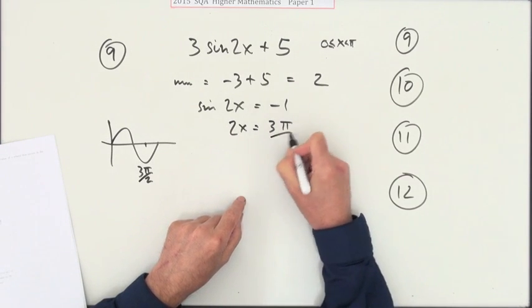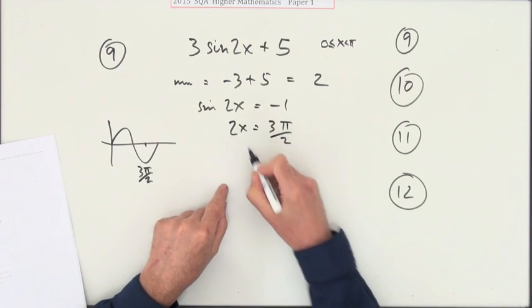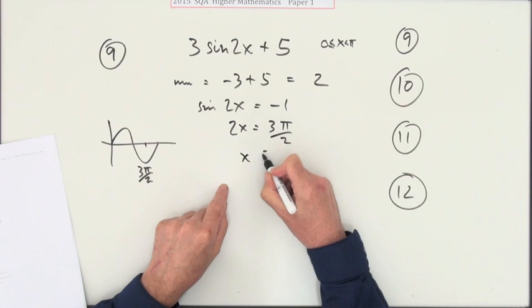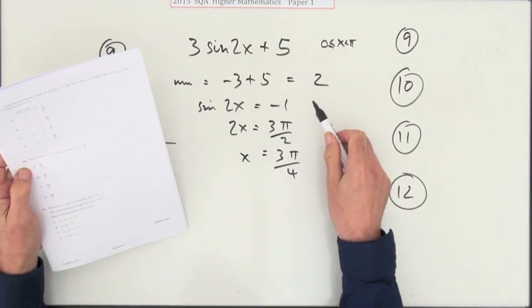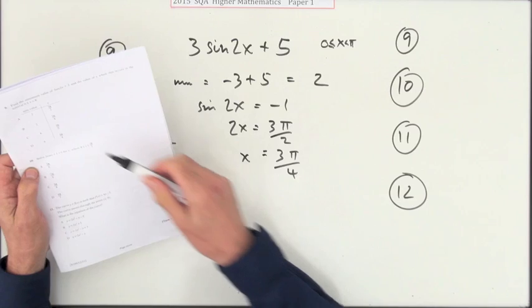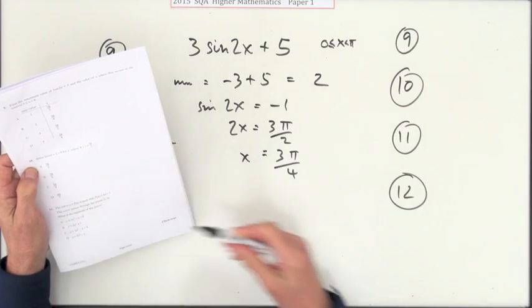It's a double angle, so take the 2 across and divide, and you've got 3π upon 4. So I'm looking for a 2 and 3π upon 4. 2, 3π upon 4 is B.